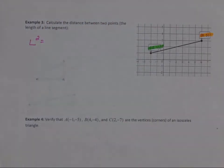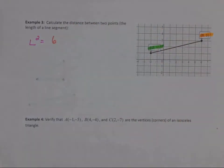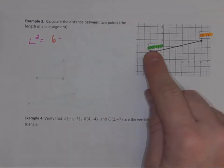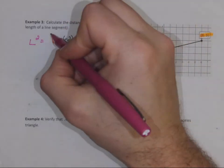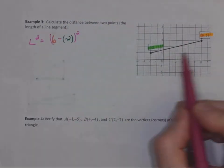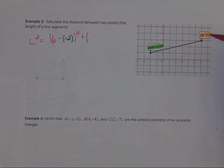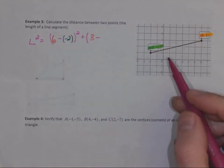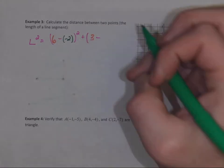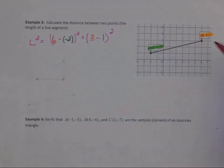squared is going to be how far on the x we ended up, take away how far we started, negative 2, that entire thing squared. That's giving us this length. We're going to add that to how high we ended up, take away how high we started. That gives us this length, and when we square it, a squared plus b squared...